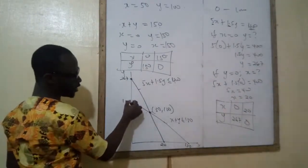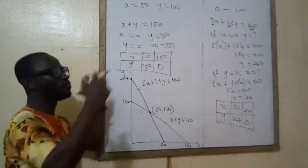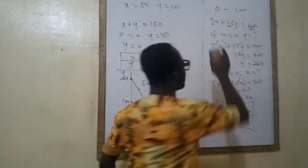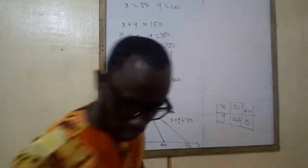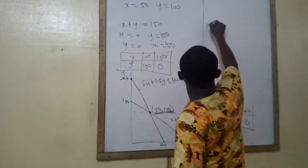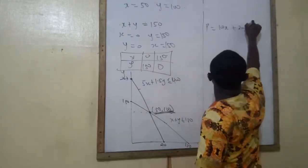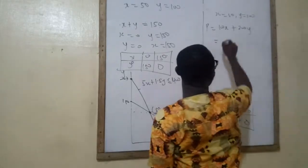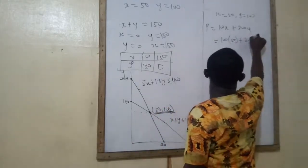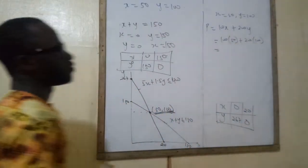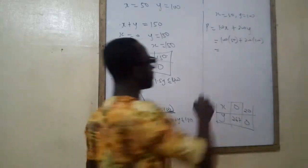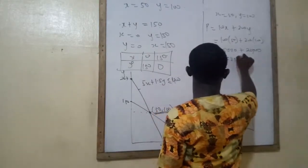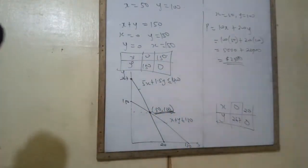Now these are all corner points — we call them corner points. But all these options cannot give us a maximum profit, so it is this one that will give us a maximum profit. Once we have this answer, we put it to the objective function. What was the objective function? P equals 100x plus 200y. So x is 50, y is 100. What would be the maximum profit? 100 times 50 plus 200 times 100. That gives us 5,000 plus 20,000, so that would be 25,000. This is the answer to the question.